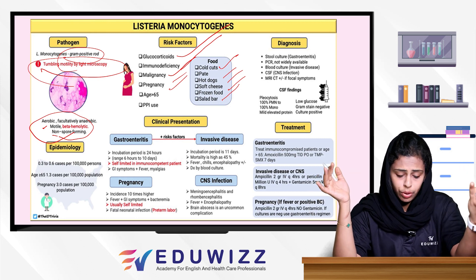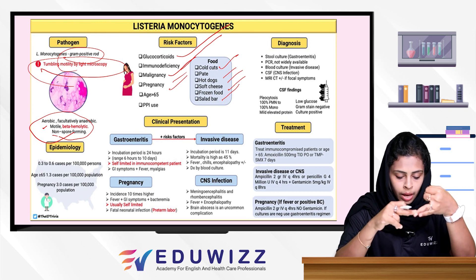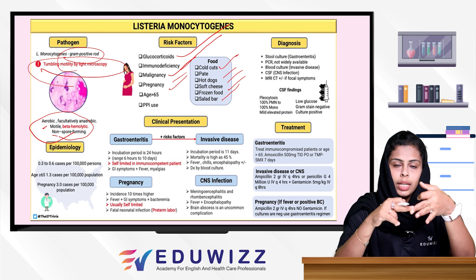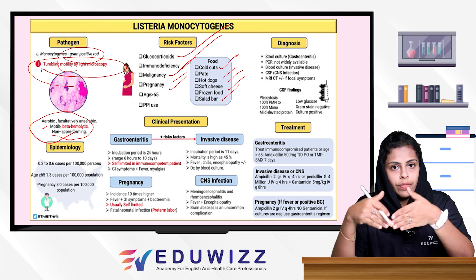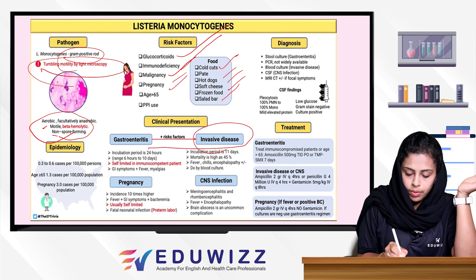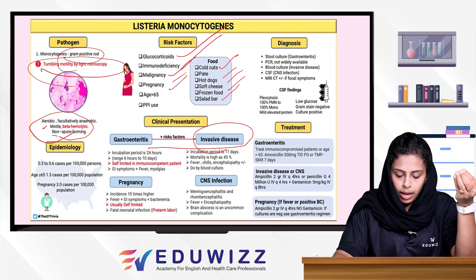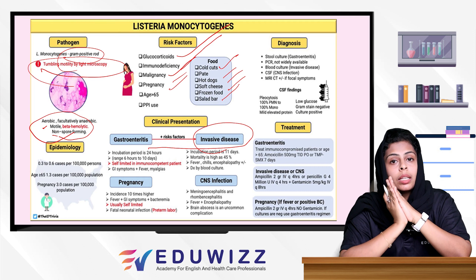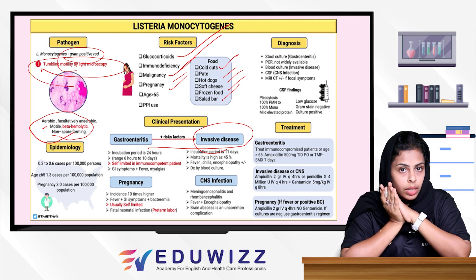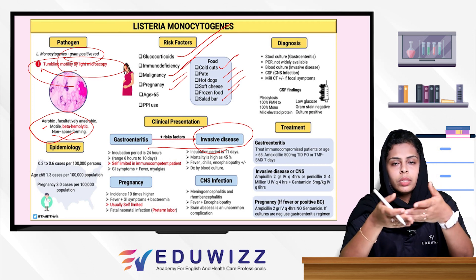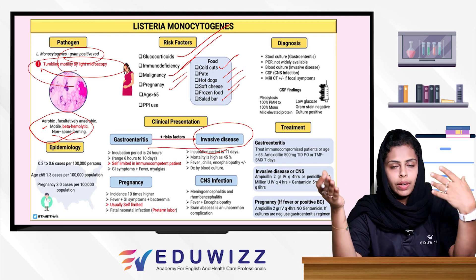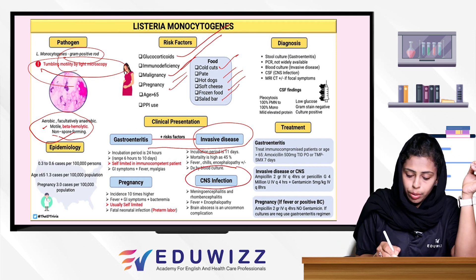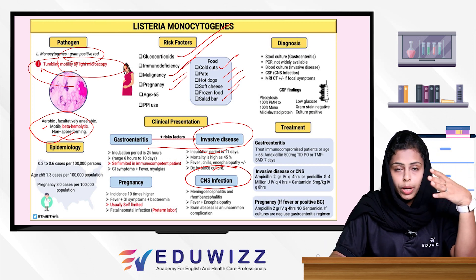Clinical presentation: First, gastroenteritis with an incubation period of 24 hours to 6 days, which is self-limiting in immunocompetent persons. Normal persons have GI symptoms, fever, and myalgias. In immunocompromised persons, it changes to invasive disease with an incubation of about 11 days and a mortality rate significant at 45 days. Symptoms include fever, chills, and encephalitis. In pregnancy, the disease risk is 10 times higher, with fever, GI problems, and bacteremia, which is mostly self-limited, but may cause stillbirth or preterm delivery. CNS infection is most common in those over 65 years old, causing meningitis, encephalitis, and rhombencephalitis. Brain abscess can also occur. Diagnosis: stool culture for gastroenteritis, blood culture for invasive disease, and CSF for CNS disease.